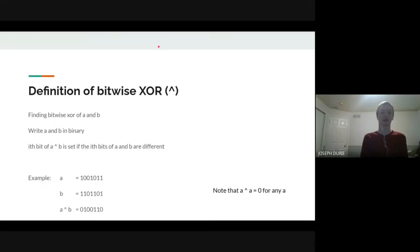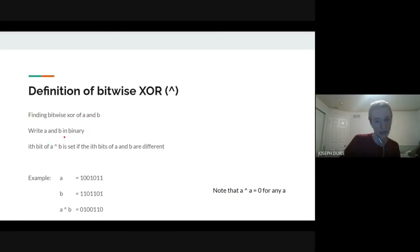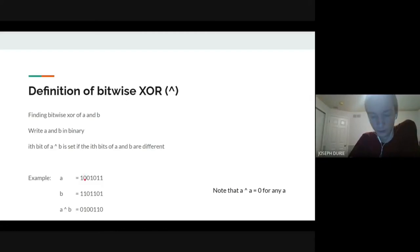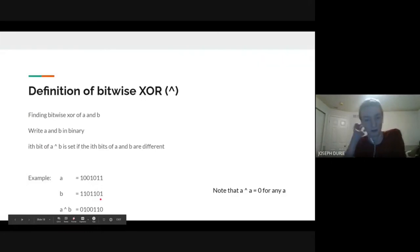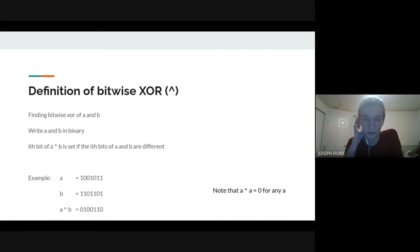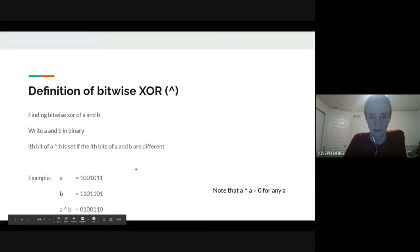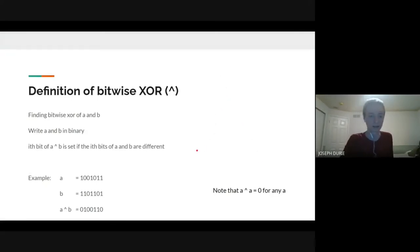Before the last problem, we'll quickly define bitwise XOR. To find the bitwise XOR of two numbers A and B, write them in binary and line them up — the bitwise XOR is one at all positions where their values are different. One important thing: A XOR A is zero for any A. This is built into basically all languages — Java, C++, Python — using the caret operator.